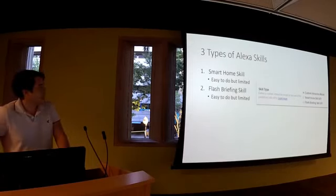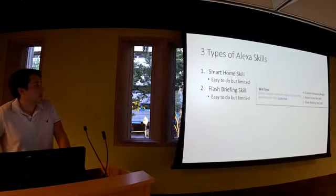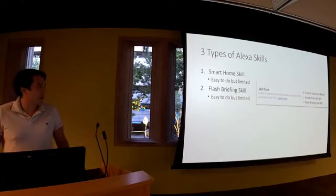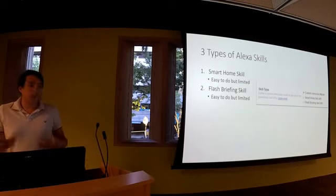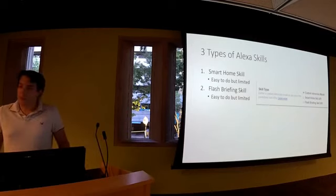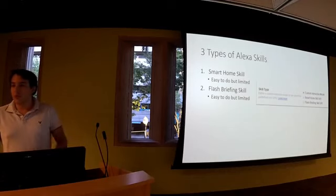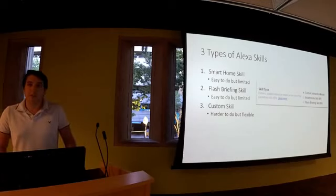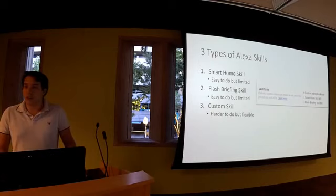There's also a flash briefing skill, like Alexa, tell me a joke or tell me the news for today. It's really easy to do with Lambda and AWS, but it's limited because you can only use certain phrases. If you want full power and flexibility on what your inputs and phrases are, you have to build a custom skill.